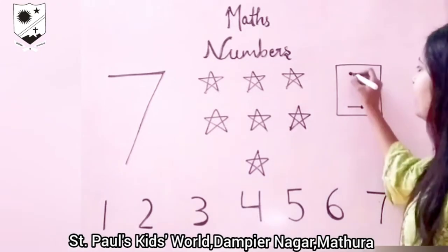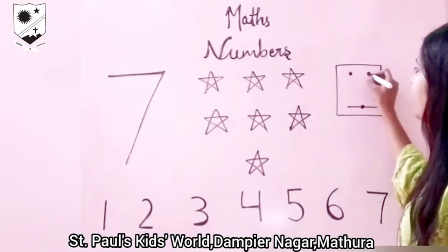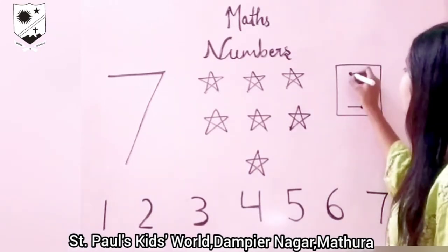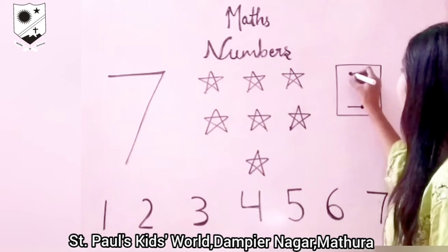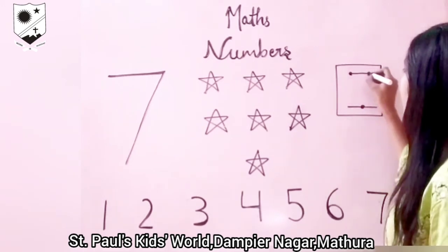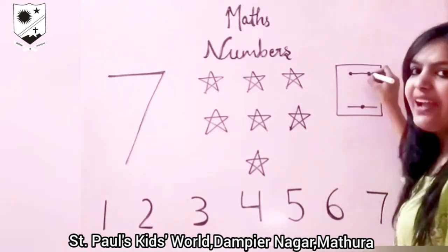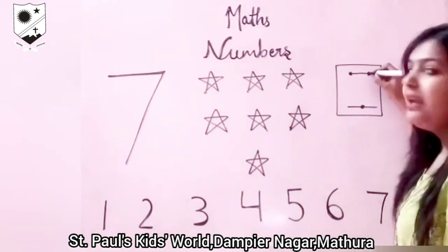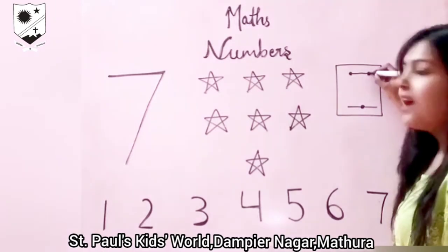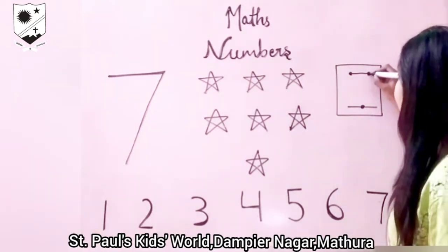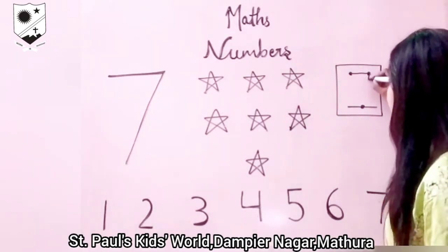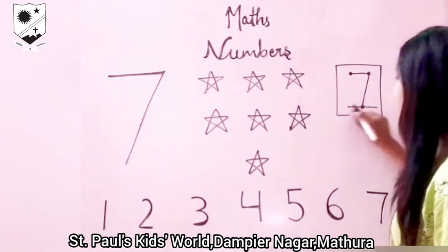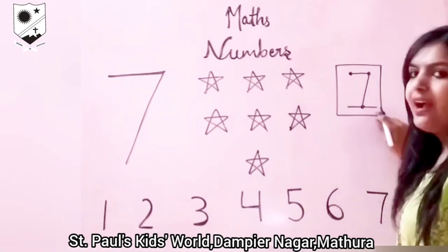Look here everyone. There are two dots. You have to connect them and make a small sleeping line. Now from this dot make a slanting line,